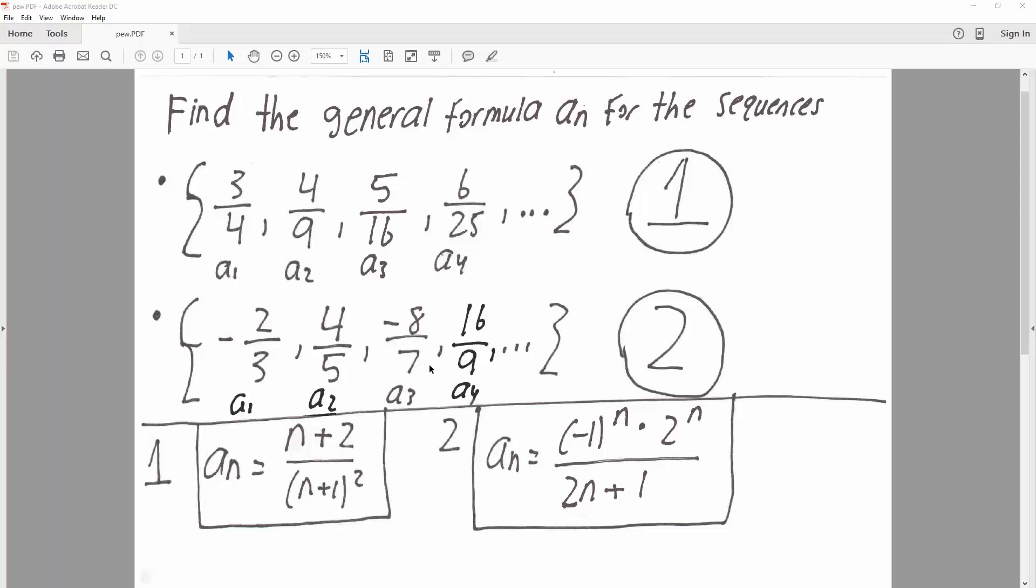So the first thing I'm going to do is for the numerator, I'm going to say negative 1 raised to n. This will allow us to have alternating. Since we know the first term is negative, if I put 1, I get a negative. So that's the first thing I'm going to do.